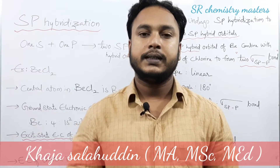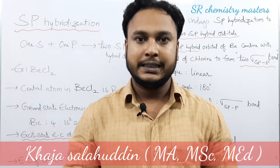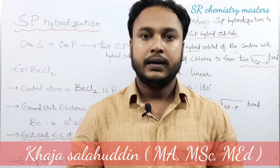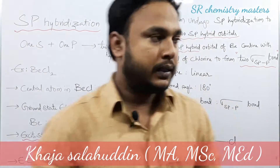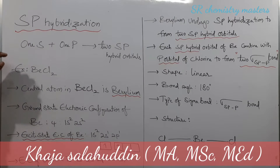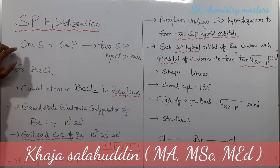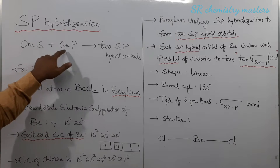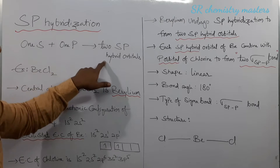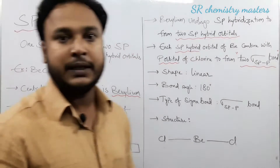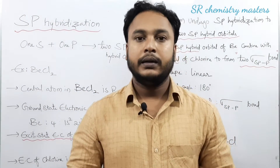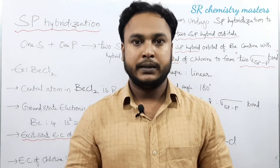In this video we are going to discuss SP hybridization. SP hybridization is the process in which one S orbital combines with one P orbital, resulting in the formation of two SP hybrid orbitals.